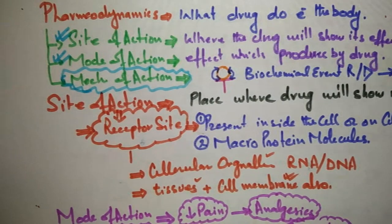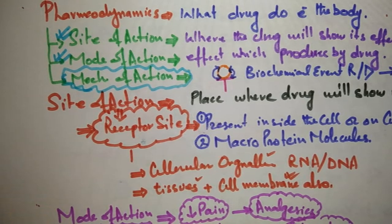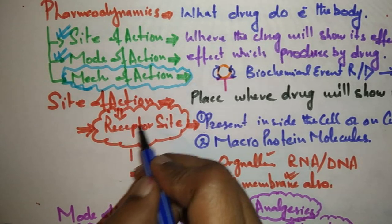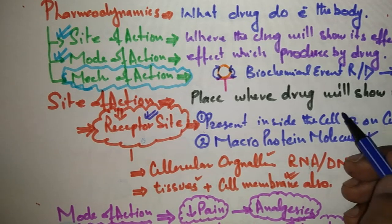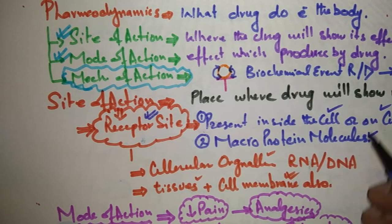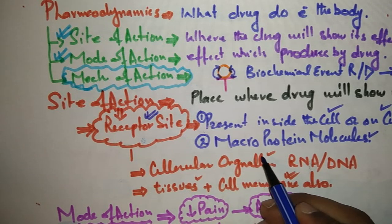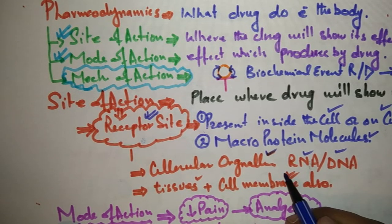So this is a simple overview of pharmacodynamics. In pharmacodynamics, you have site of action — mainly receptor sites. Receptors are macroprotein molecules present on the surface of cells or inside cells. Some drugs may affect cellular organelles like DNA and RNA, and some drugs may affect the cell membrane directly.